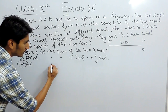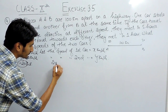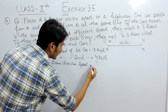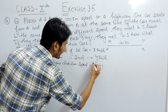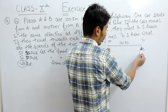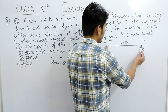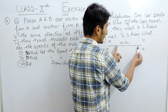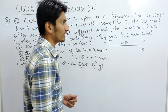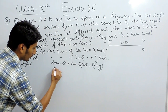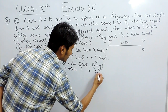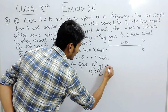So when they are walking in the same direction, the relative speed is x minus y. In the other case, if they are walking in opposite directions — say one at 50 and one at 30 — in one hour they together cover 80 km, so the relative speed is added. Therefore, if they are walking in opposite directions, the speed is x plus y km per hour.